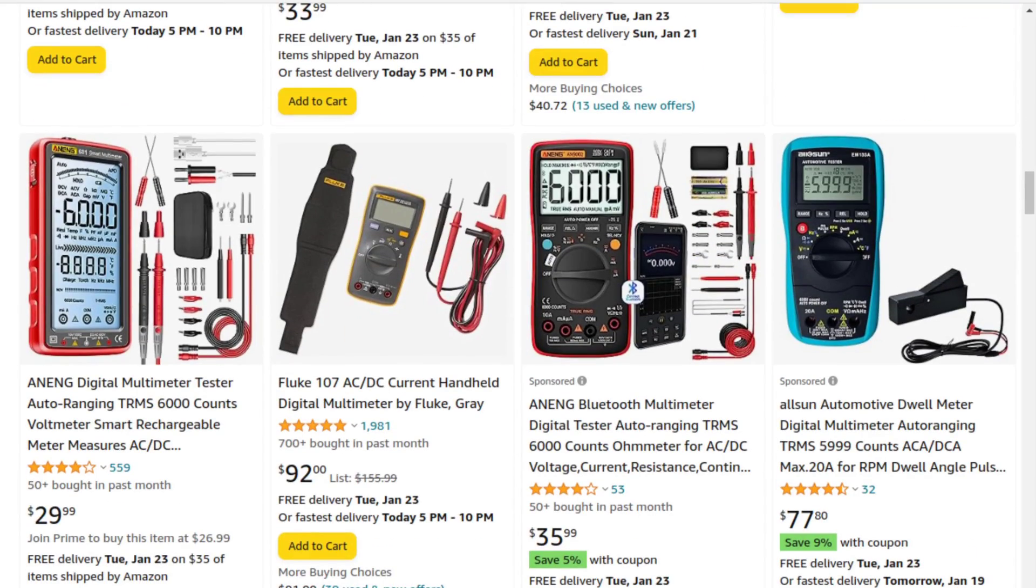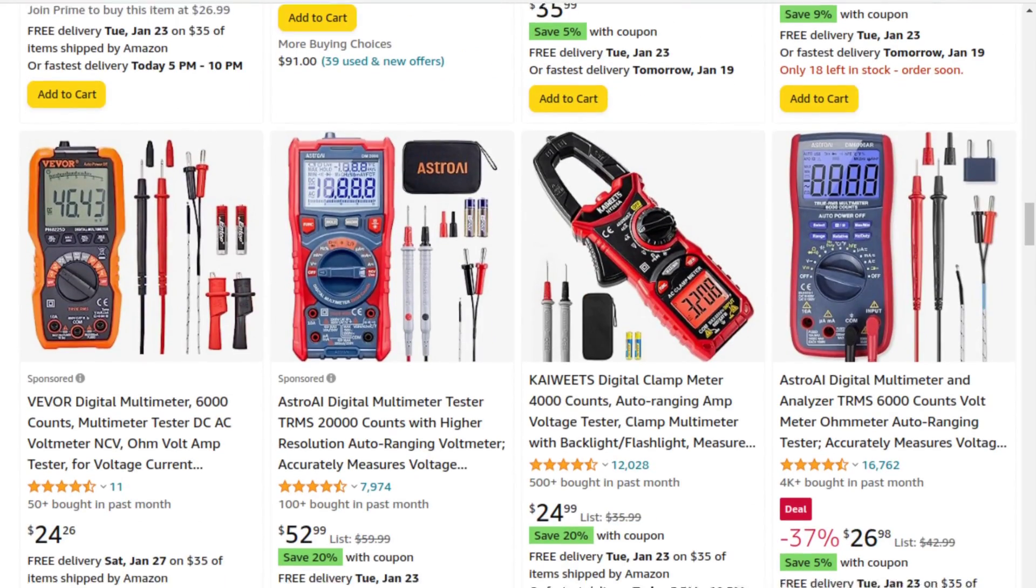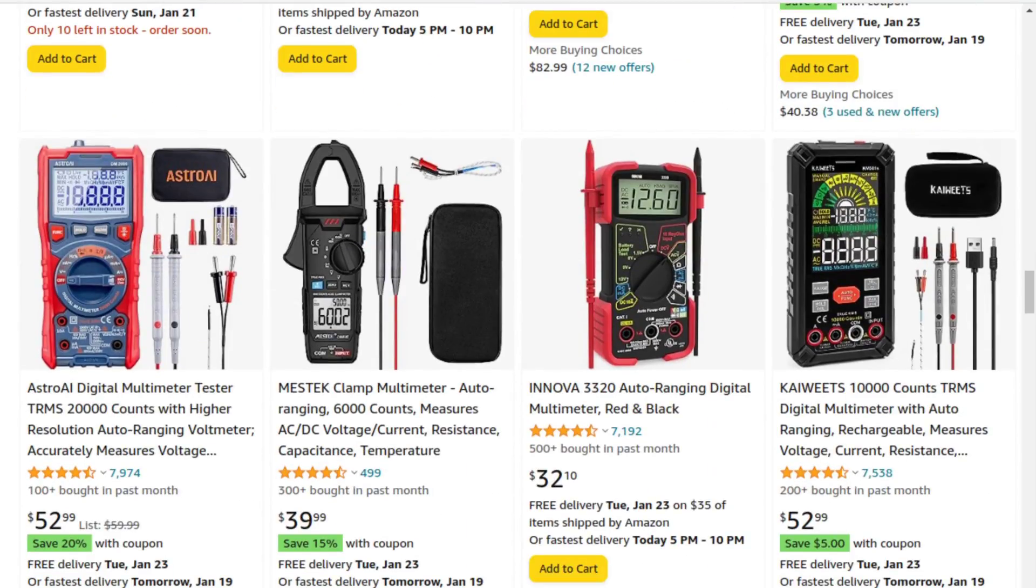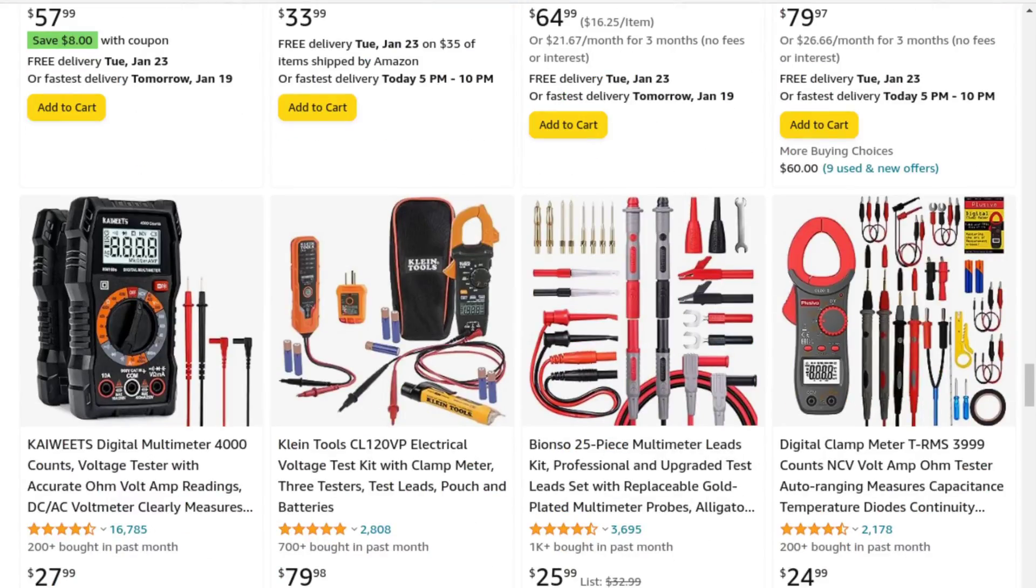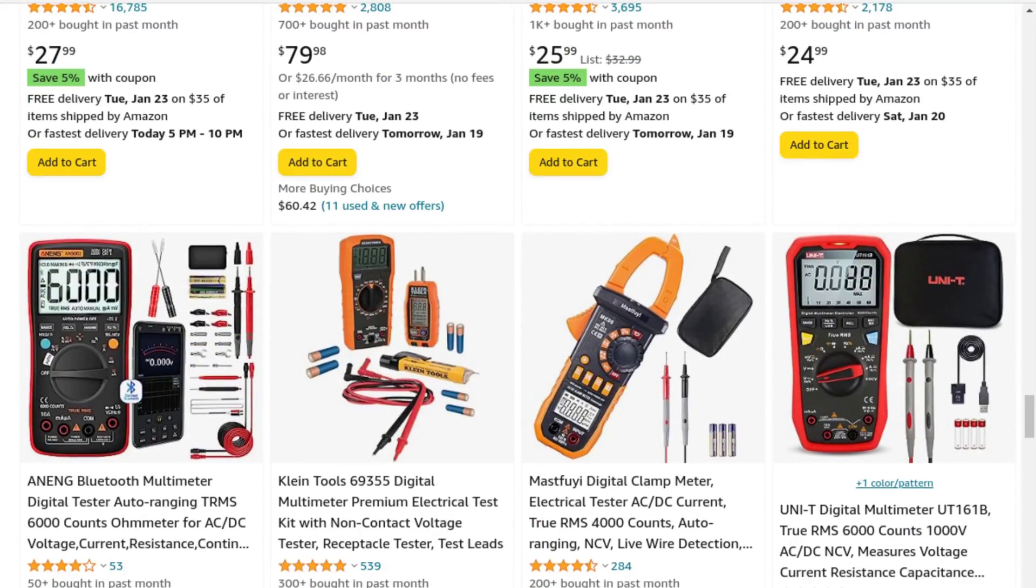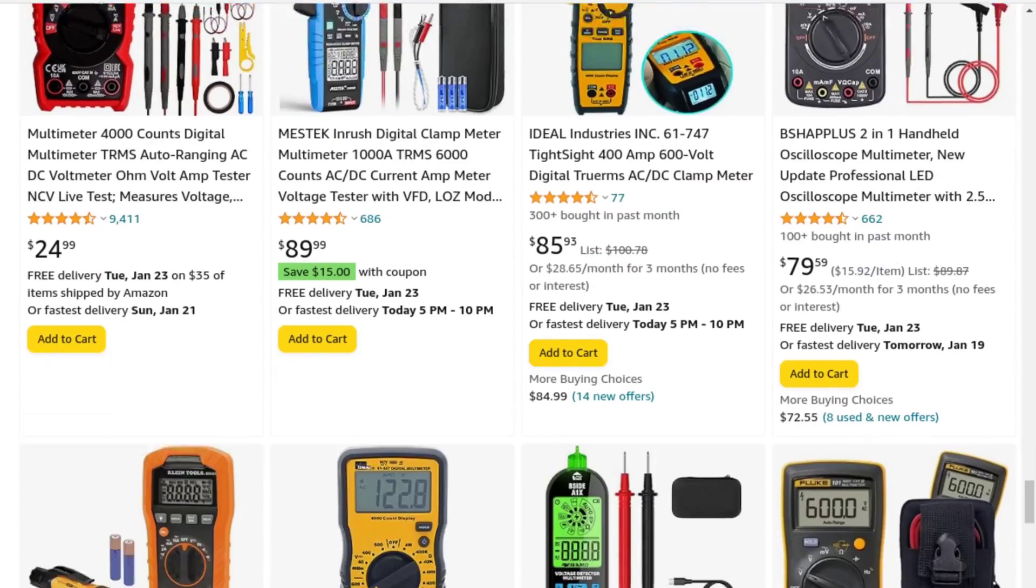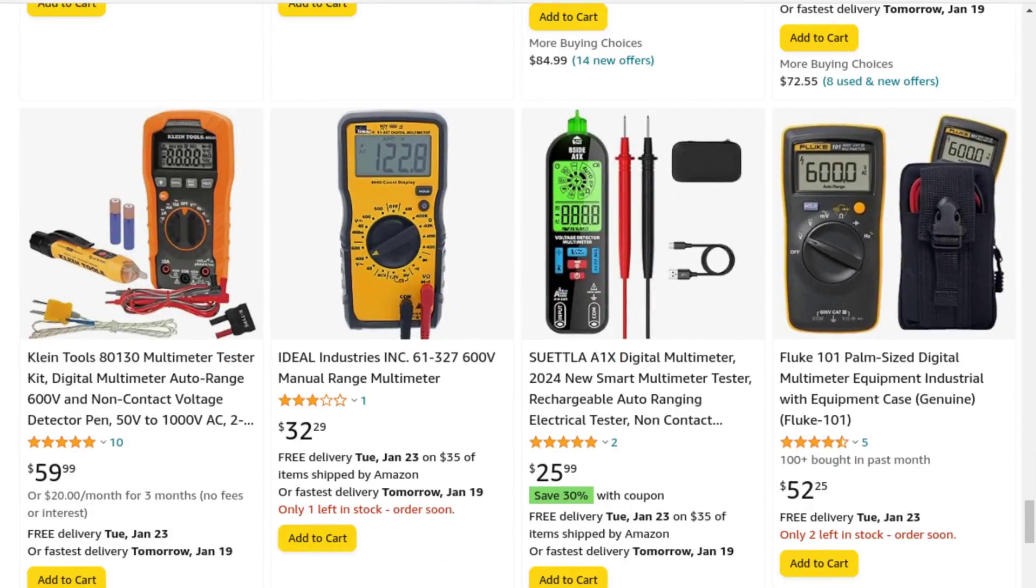The criteria that is guiding my hunt are the following items: Electronics is going to be favored over appliance work. No 9-volt batteries. A 4,000-count minimum with a preference for 6,000-count. And lastly, auto-ranging.